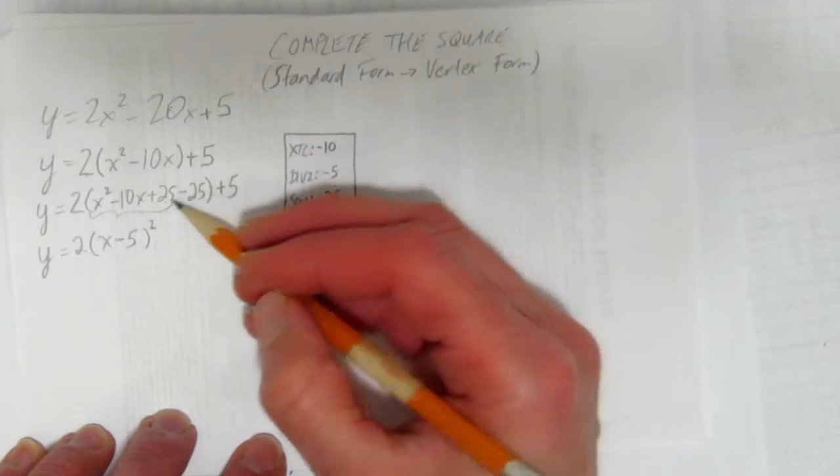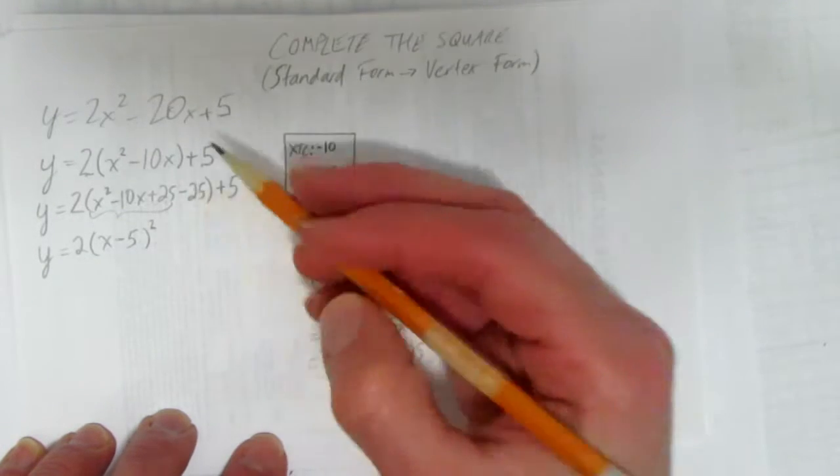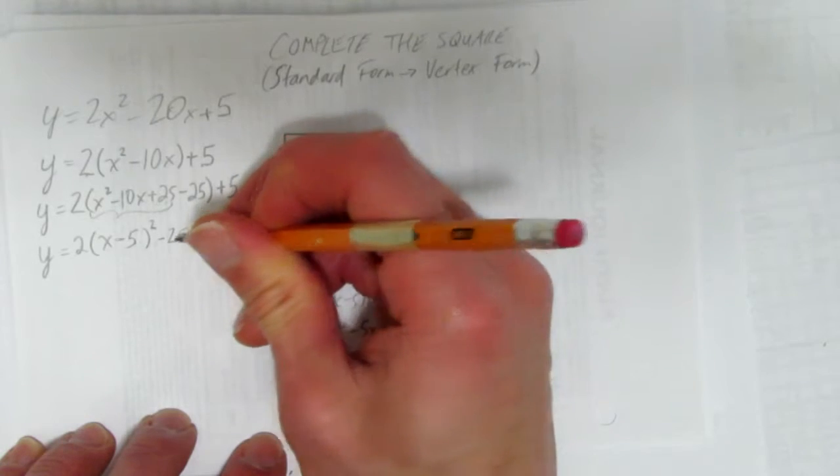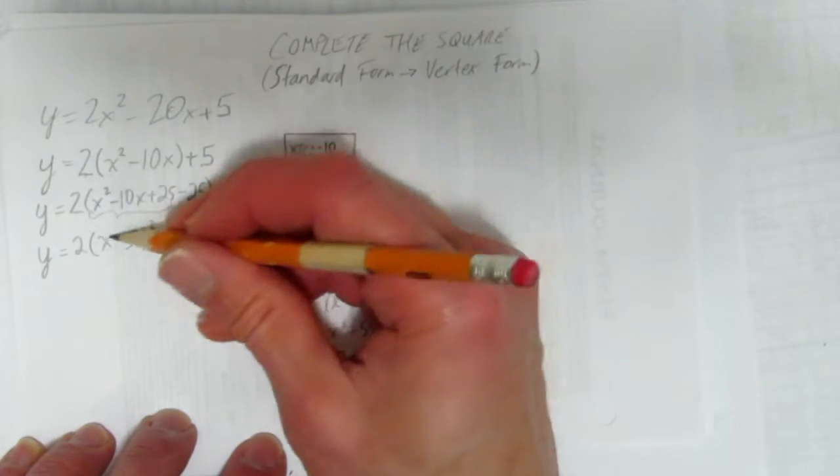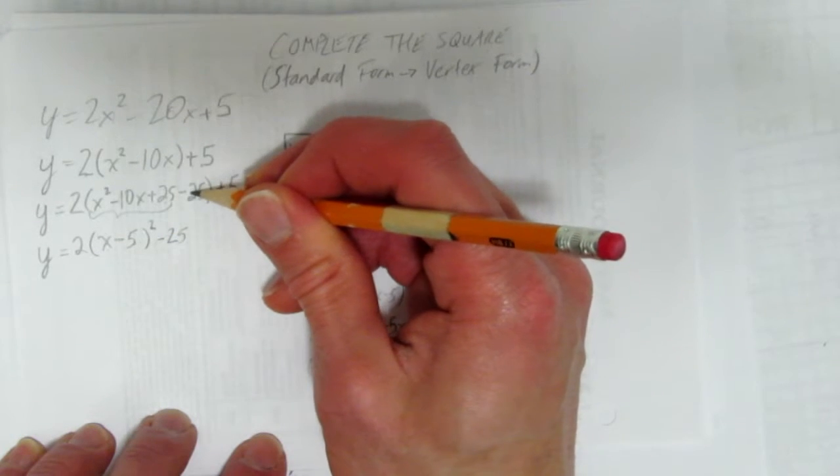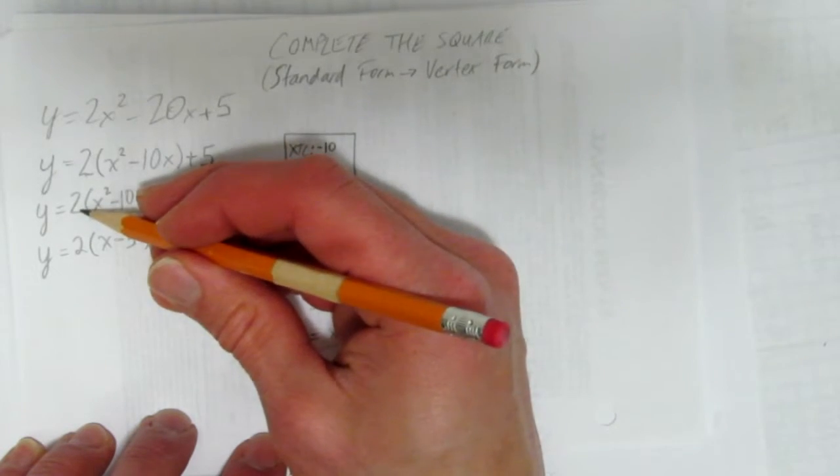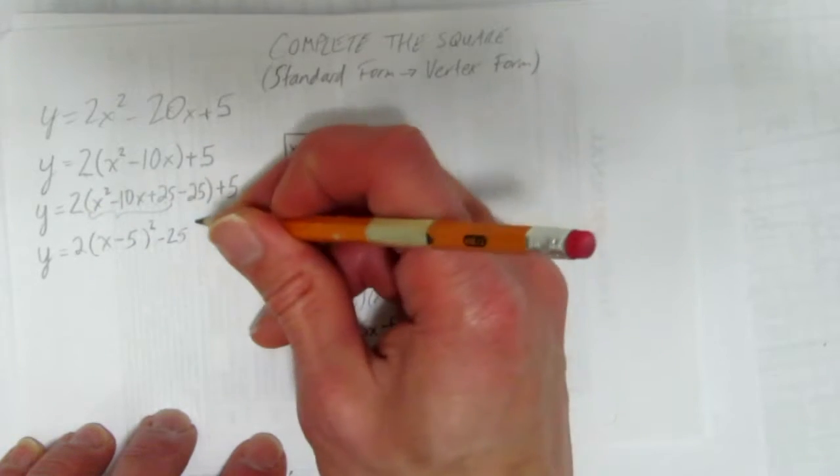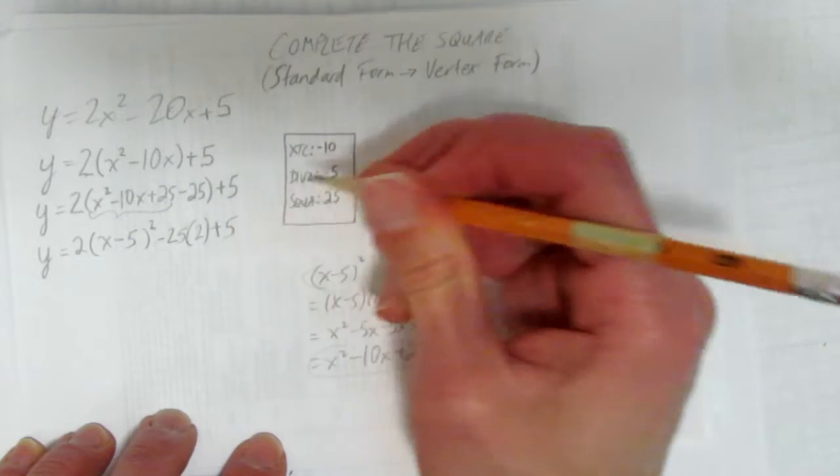The problem is, that only dealt with these first three things. This last minus 25 is still hanging around, so I've got to write it down. But you'll notice, it's no longer in these brackets, it's been pulled out. These first three things make this perfect square, but this minus 25 isn't a part of it, so I've got to pull it out of the brackets. When I do, it has to get times by the 2 that it would be, because it's in this bracket, it should be times by 2, so times it by 2. Then keep that plus 5 around.